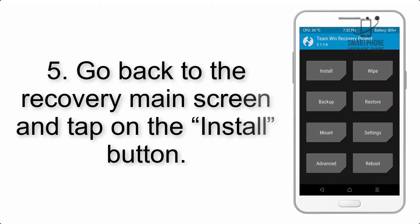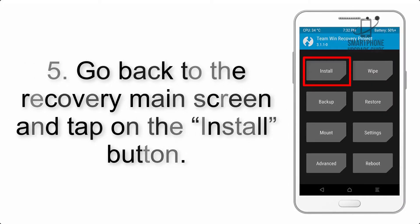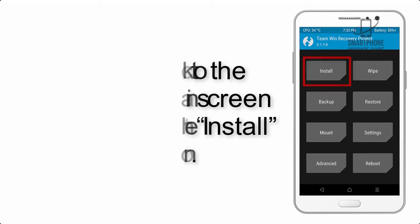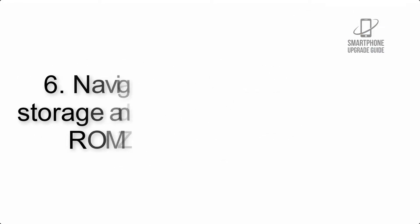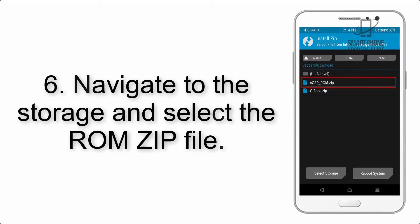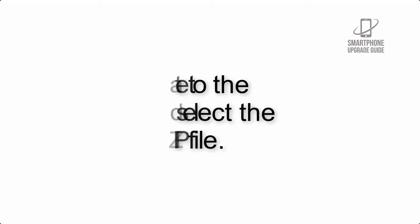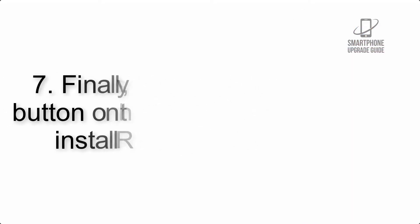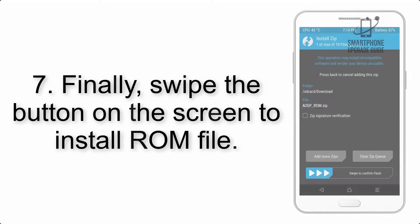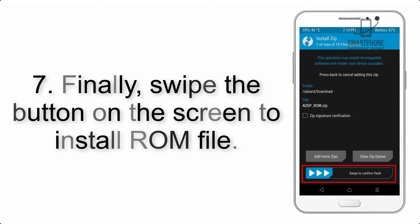Step 4: Swipe the button to wipe the device. Step 5: Go back to the recovery main screen and tap on the Install button. Step 6: Navigate to the storage and select the ROM zip file.